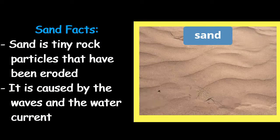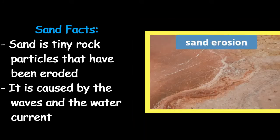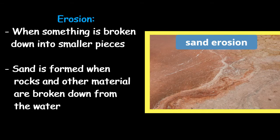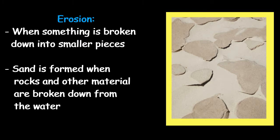Sand is tiny little rock pieces that have been eroded. Eroded, or erosion, is when something is broken down into smaller pieces. Sand is tiny rock particles that have been broken down into smaller pieces. It's formed by the water. When the water rushes against the rocks and other materials like gravel or seashells, it breaks it down smaller and smaller.